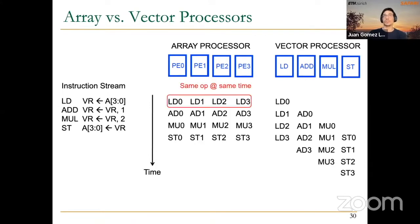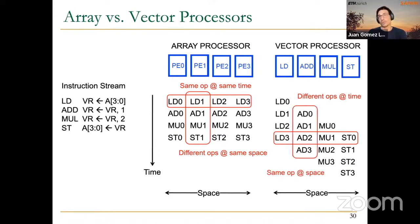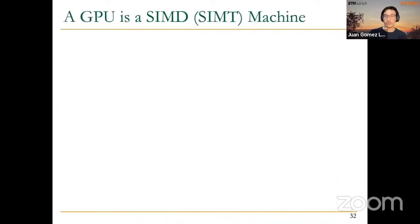The difference between the two is that in the array processor we perform the same operation at the same time across elements, while in the vector processor we perform different operations at the same time. This is the time-space duality. If you want to learn more about SIMD processing, I recommend a lecture from Professor Mutlu delivered in spring 2021.